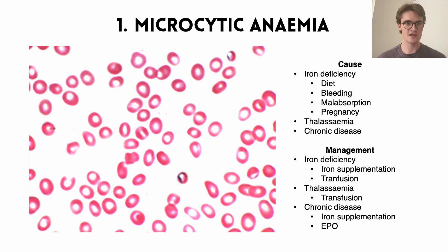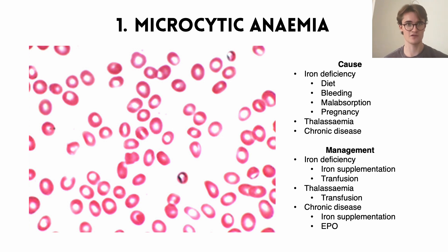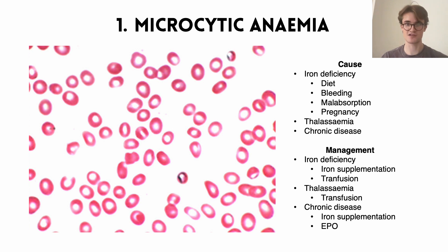The first blood smear that we have to know is microcytic anemia. When we look at this blood smear it can look pretty normal and it can be very difficult to say that's microcytic anemia just looking at the blood film. But alongside this blood film we'll have done a full blood count which will have told us the MCV — that is the mean cell volume. In microcytic anemia the red blood cells are smaller than normal, and there are three main causes: iron deficiency, which is by far the most common; thalassemia, a genetic condition with a defect in haemoglobin; and anemia of chronic disease, which is often kidney disease.